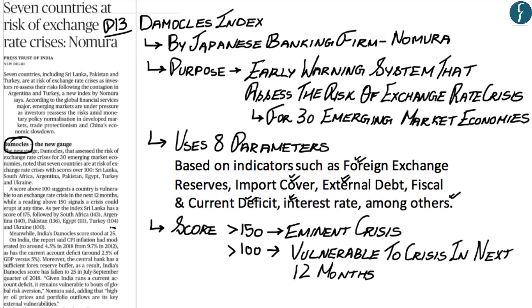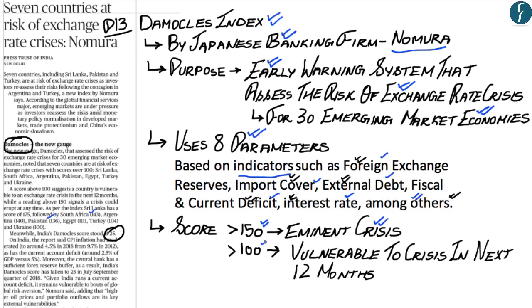India's score on the Democles index is 25. The index is prepared by Nomura, a Japanese banking firm, and covers 30 emerging market economies including Argentina, South Africa, Pakistan, Egypt, India, and Turkey. A score above 150 signals an imminent exchange rate crisis; above 100 signals vulnerability within the next 12 months. It uses 8 parameters covering forex reserves, import cover, external debt, fiscal and current deficit, and interest rates.